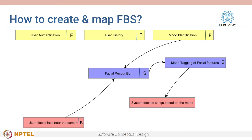The next step is to identify how the structures and behaviors satisfy a particular requirement. Now we have identified structures, behaviors, and functions and also mapped them. This looks something like a graph — it is called the Function Behavior Structure, or FBS, graph.